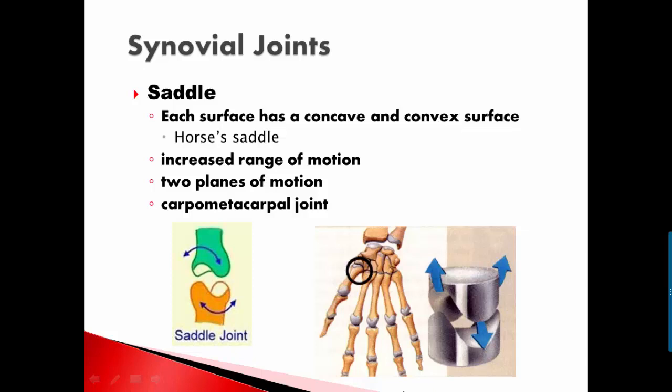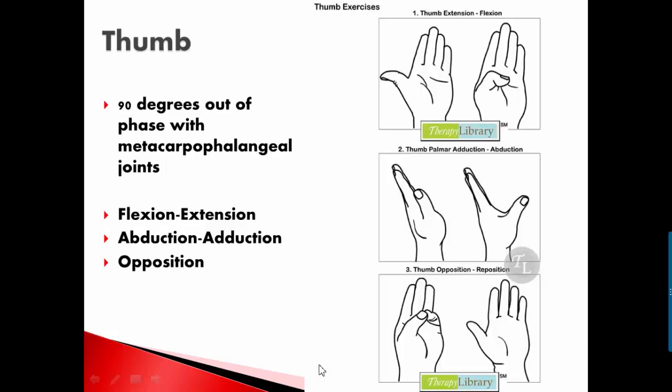All right, moving on. A saddle joint, which is kind of similar to the ellipsoid joint, but it's special in that on each surface, it has a concave and a convex surface, very similar to a horse's saddle. So if you think of a horse's saddle, it is convex anterior to posterior, and concave medial to lateral. So it has a concave and convex surface on both surfaces, and that basically increases your range of motion. So you still have two planes of motion, but they are much larger. And one is your carpometacarpal joint, or your thumb joint. Your thumb joint has a huge range of motion.